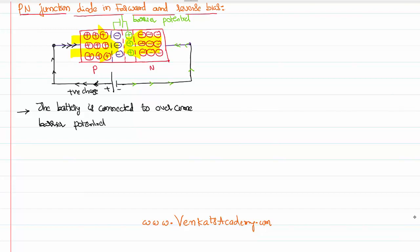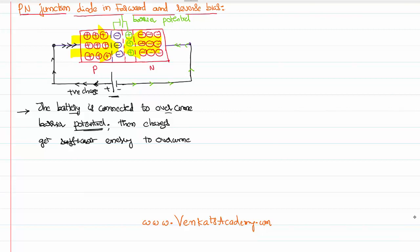As explained in the previous lesson, if it is germanium the barrier potential is 0.3V, and if it is silicon it is 0.7V. So even though you connect a battery, if you don't give a voltage more than the barrier potential, charges won't flow. But if the battery voltage is more than the barrier potential, then both electrons and holes get sufficient energy to overcome the depletion layer — the middle region — and start passing through the device, meaning the device becomes conducting.